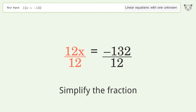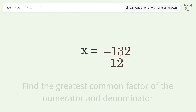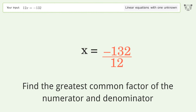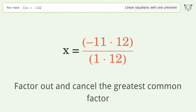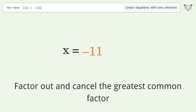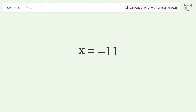Simplify the fraction. Find the greatest common factor of the numerator and denominator. Factor out and cancel the greatest common factor. And so the final result is x equals negative 11.